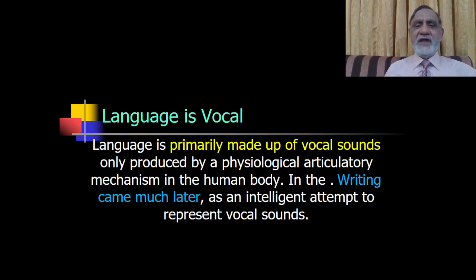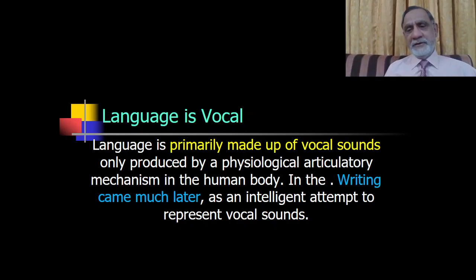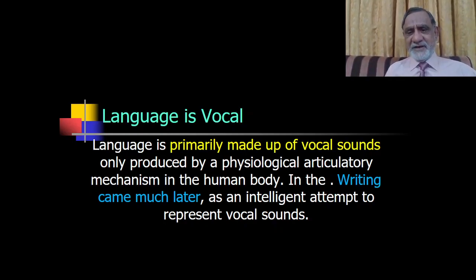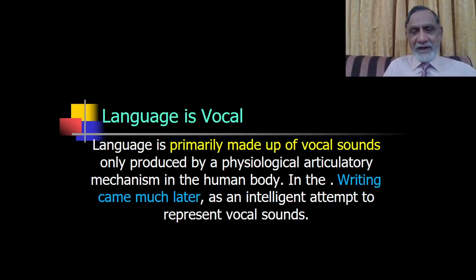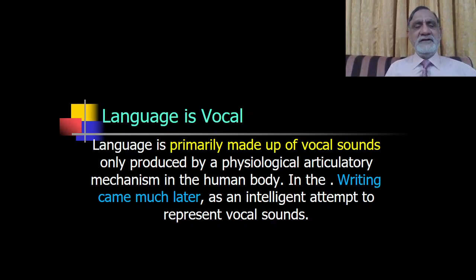The next characteristic is that language is vocal. Language is primarily made of vocal sounds produced by the physiological articulatory mechanism in the human body. Writing came much later as an intelligent attempt to represent vocal sound. Basically, language developed as a vocal means of expression — initially there was no writing, but as time passed, languages were converted into written symbols as well.